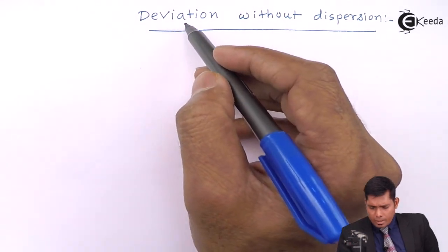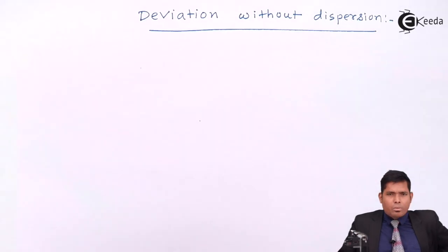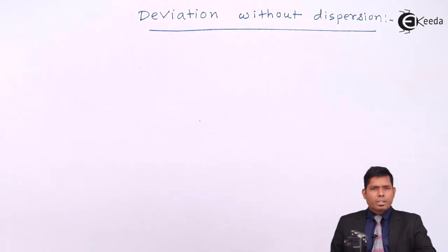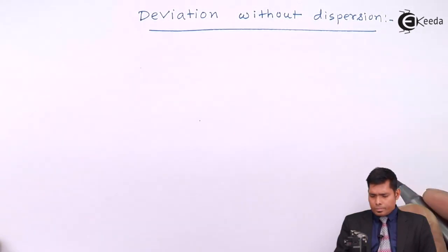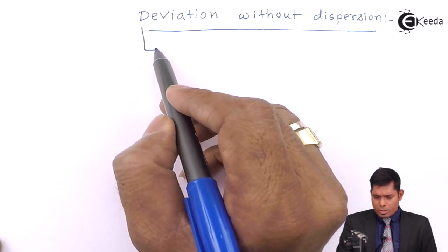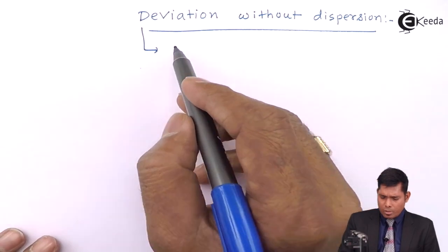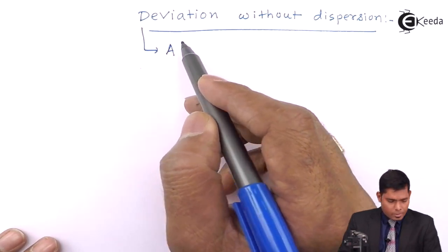Now deviation is there. So what we will do — we will consider a situation. This type of combination is called achromatic combination of prisms. We will consider a diagram. This type of arrangement is called an achromatic combination of prisms.